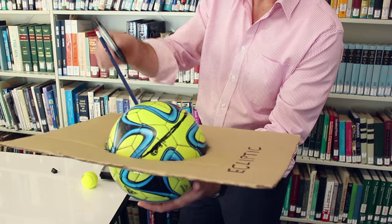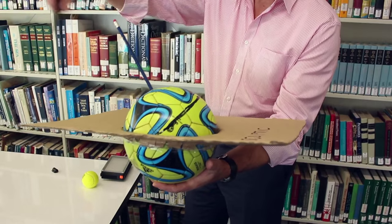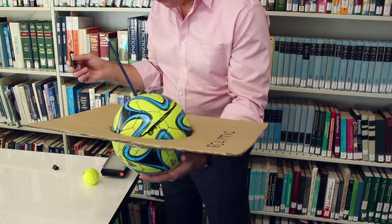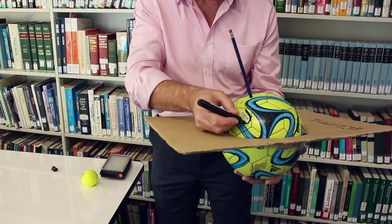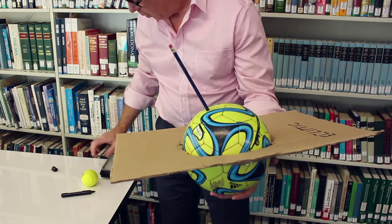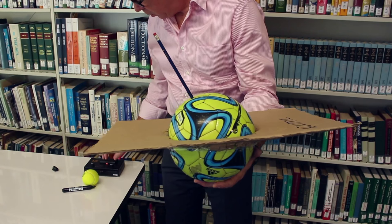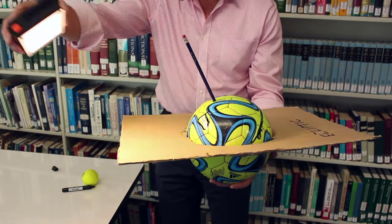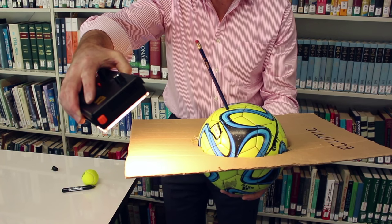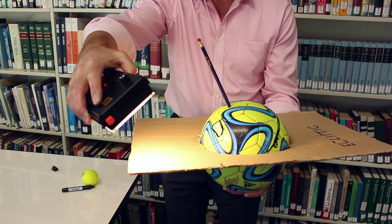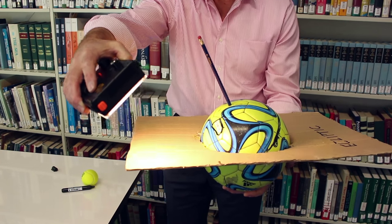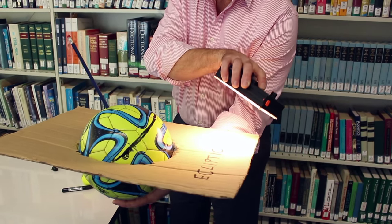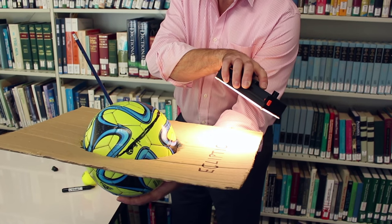The pencil sticking out the top of the football is the axis of Earth's rotation. In the northern hemisphere, where we live — the barcode, if you like, is approximately where Great Britain is. In the summer months, when the Sun is in that position with respect to the Earth, we're tilted towards the Sun, and that's our summer. In the winter months, the Sun is over here, and our hemisphere is tilted away from it.